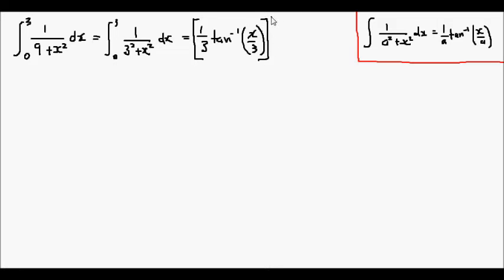But we still need to include the upper and lower limits. So the expression that we end up with is 1 over 3 times the inverse tan of x over 3 bounded by the upper and lower limits of 3 and 0.